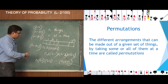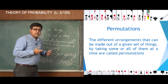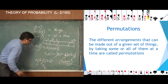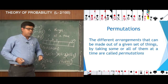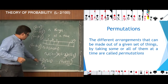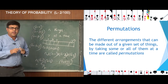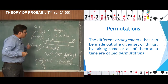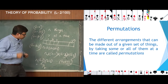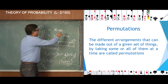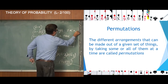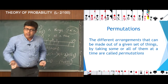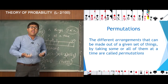This quantity — n into n minus 1 into n minus 2 into ... into n minus r plus 1 — is denoted by the symbol nPr, where P stands for permutation. So nPr symbolically means the number of ways of arranging n things by taking r at a time, where r is less than or equal to n.